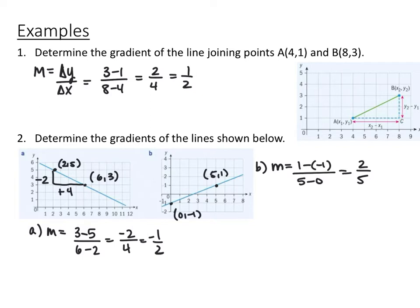Same thing over here. You can either use slope triangles, so you're going up 2 and to the right 5. Or you could have used the slope formula, and I used the point 0, negative 1 and 5, 1. So 1 minus a negative 1 over 5 minus 0 is 2 over 5.